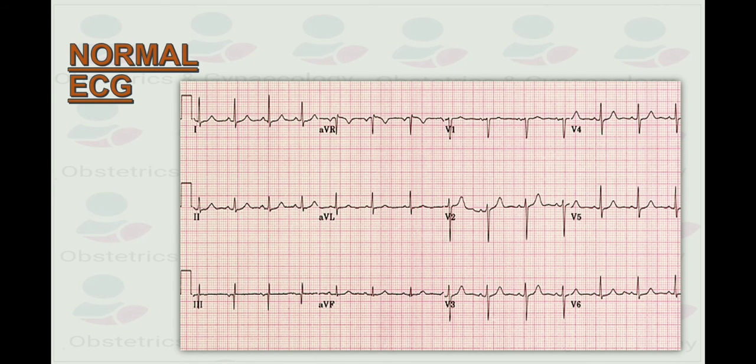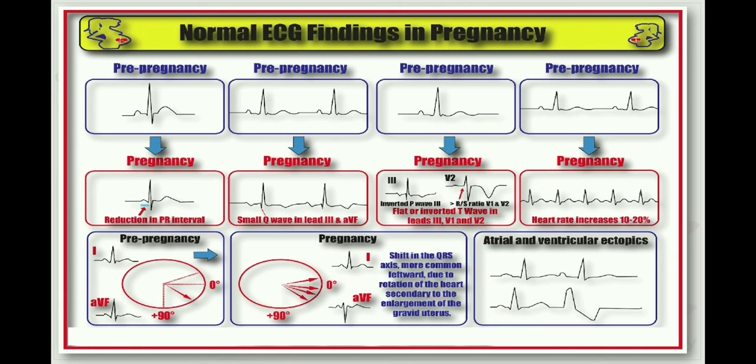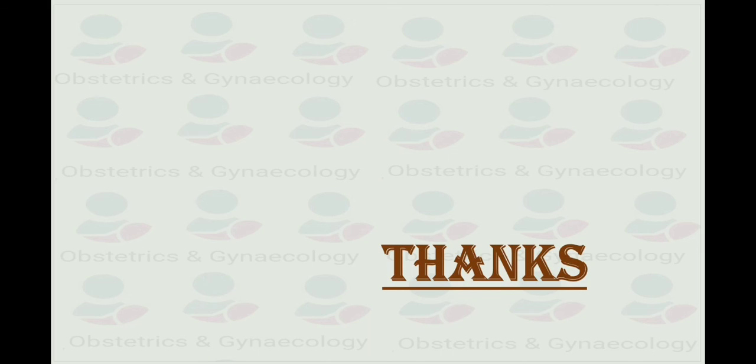In pregnancy, we have reduction in PR interval, small Q wave in lead 3 and AVF, and flat or inverted T wave in lead 3, V1 and V2, and heart rate increases by 10 to 20%. Thank you so much for your kind listening. That was a description about the interpretation of ECG in pregnancy. Thank you so much.